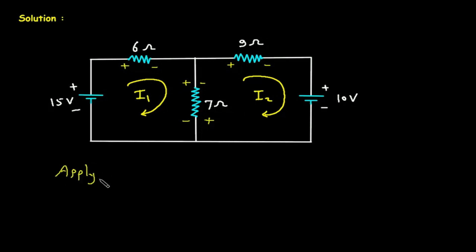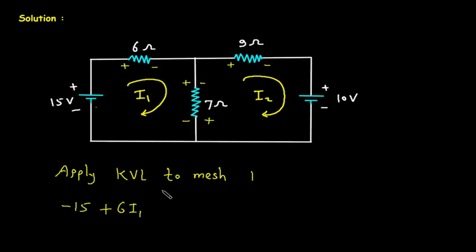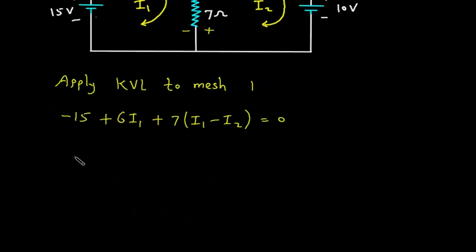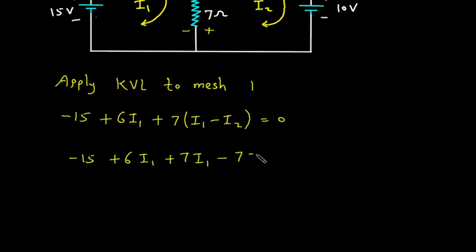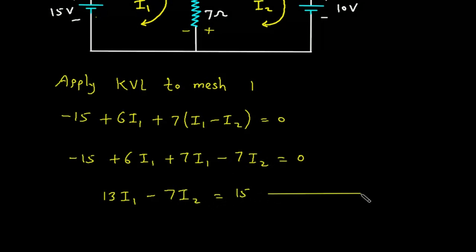Now apply KVL, that is Kirchhoff's Voltage Law, to mesh number 1. Starting from here: minus 15, then plus 6·I1, then plus 7·(I1 minus I2), equals 0. Expanding: minus 15 plus 6·I1 plus 7·I1 minus 7·I2 equals 0, which gives 13·I1 minus 7·I2 equals 15. Let this be equation number 1.